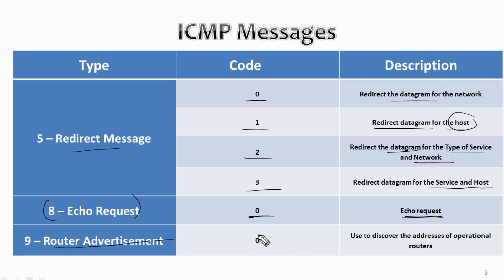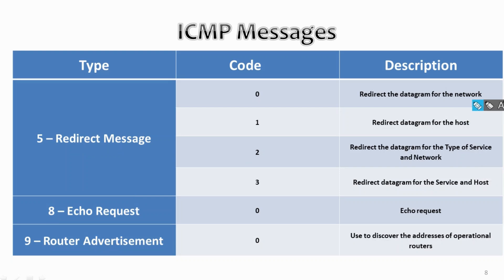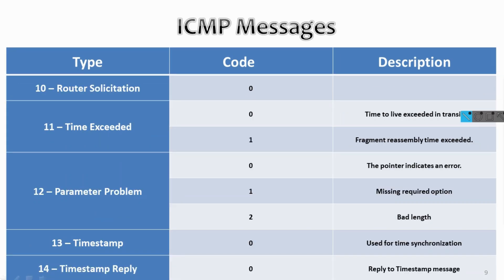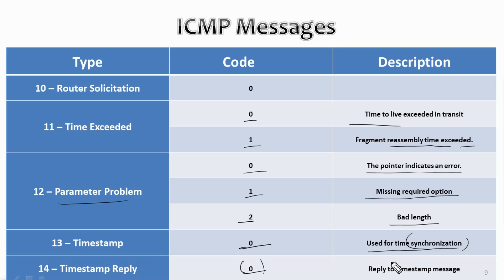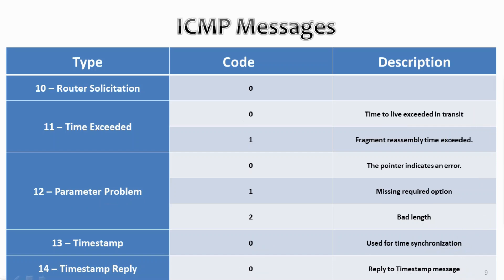Type 9 is route advertisement (code 0), used to discover the addresses of operational routers. Type 11 is time exceeded: code 0 means TTL exceeded in transit, code 1 means fragment reassembly time exceeded. Type 12 is parameter problem: code 0 means the pointer indicates an error, code 1 means a missing required option, code 2 means bad length. Type 13 is timestamp (code 0), used for time synchronization, and type 14 is timestamp reply (code 0), used to reply to timestamp messages.